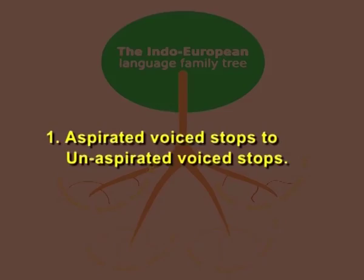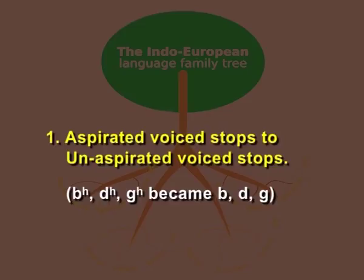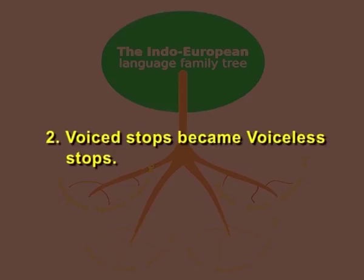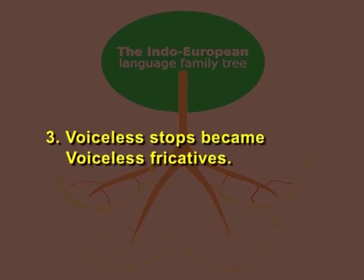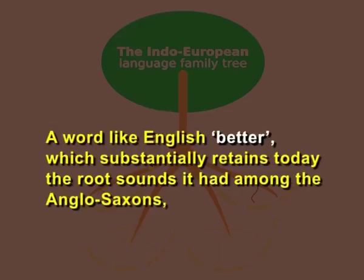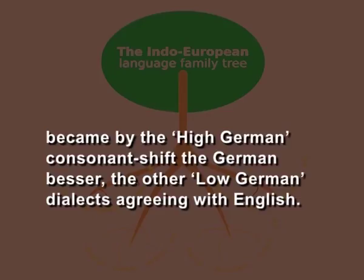The first change is from aspirated voiced stops to unaspirated voiced stops: bha, dha, and gha became b, d, and g. The next change: voiced stops became voiceless stops — b, d, g became p, t, and k. The third change: voiceless stops became voiceless fricatives — p, t, k became f, th, and h. A word like English 'better', which substantially retains today the root sounds it had among the Anglo-Saxons, became by the High German consonant shift the German 'Besser', with other Low German dialects agreeing with English.